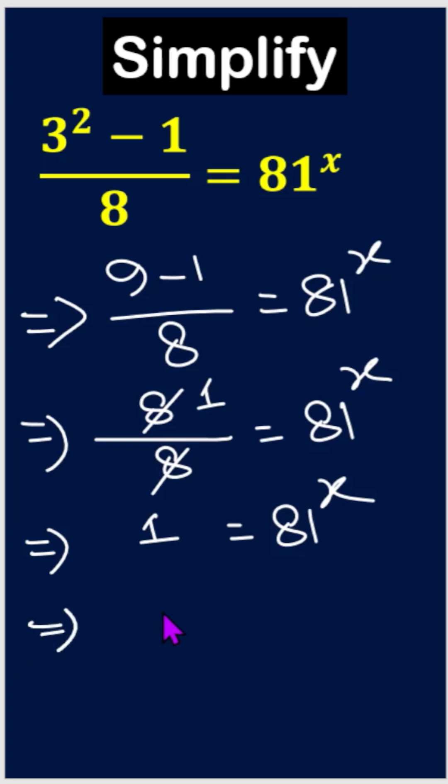Now, what can we do? We know a to the power 0 means 1. So in this case here we can also write 81 to the power 0, it means this 1.